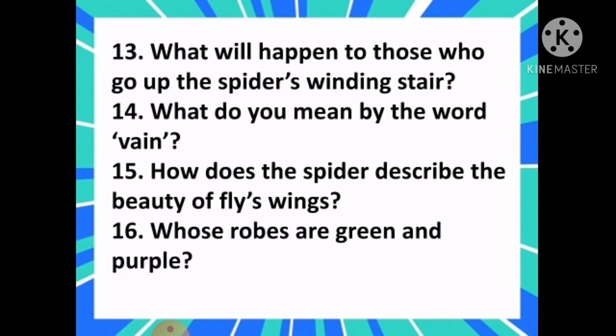Question number 14: What do you mean by the word 'vain'? Question number 15: How does the spider describe the beauty of the fly's wings? Question number 16: Whose robes are green and purple?